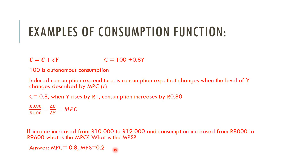Here's another example you can try. If income were to rise from 10,000 to 12,000 rand, and you were told that consumption increased from 8,000 to 9,600 rand, what would be little c, or the marginal propensity to consume? You could work out the change in consumption over the change in income, and you would get 0.8. By deduction, the marginal propensity to save must therefore be equal to 0.2. The two together must sum to 1.